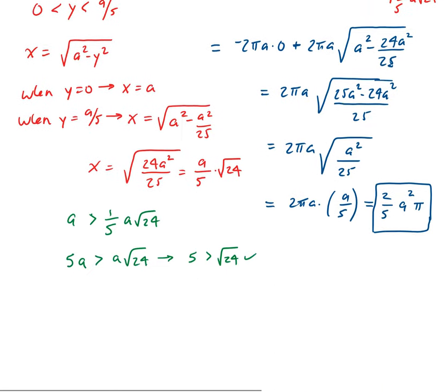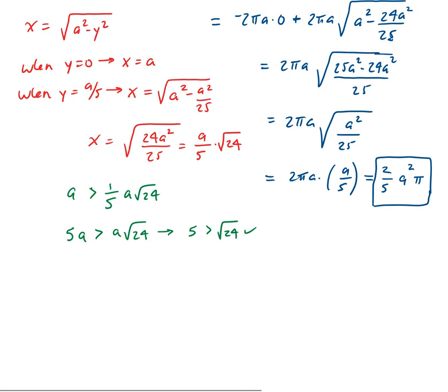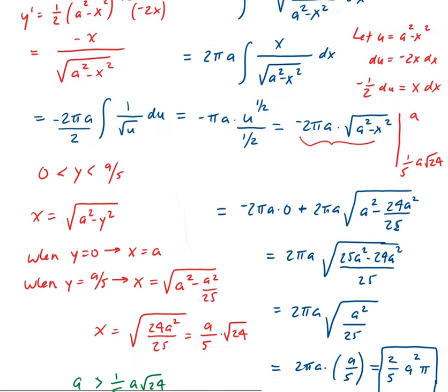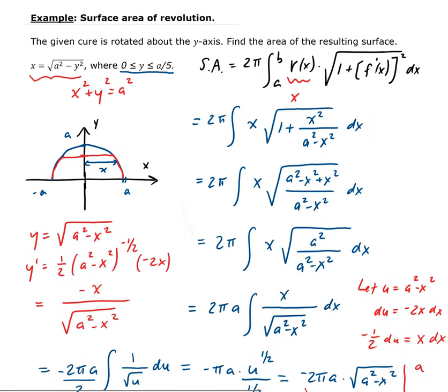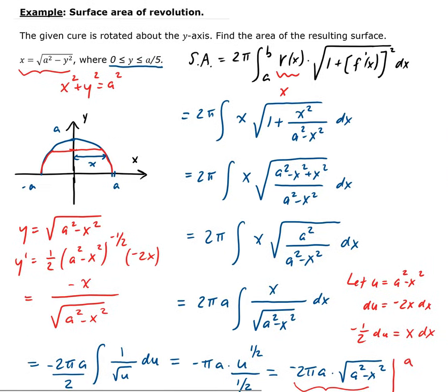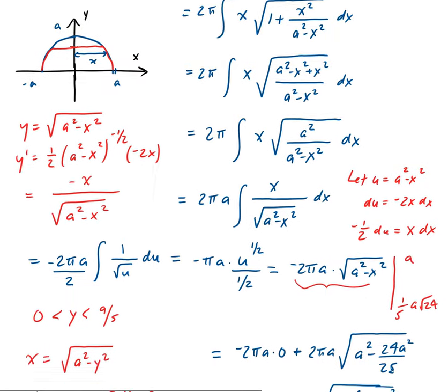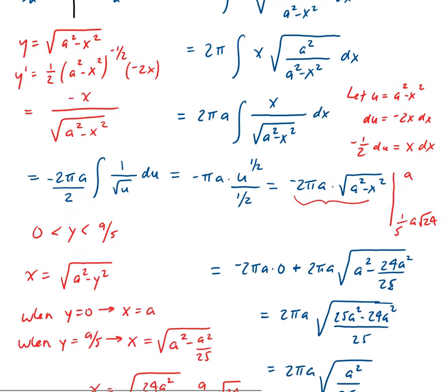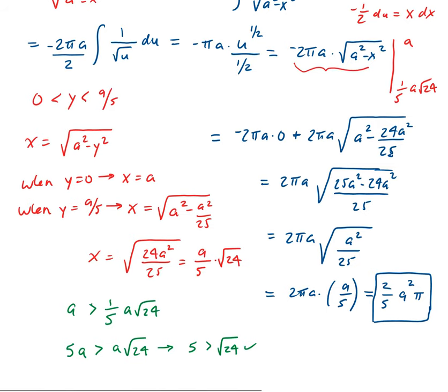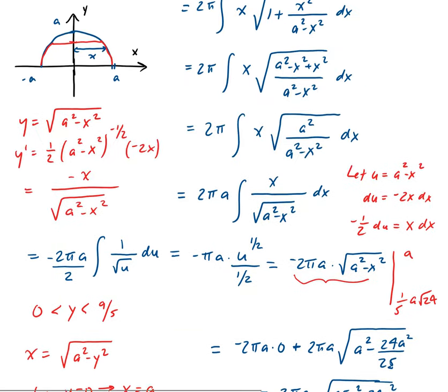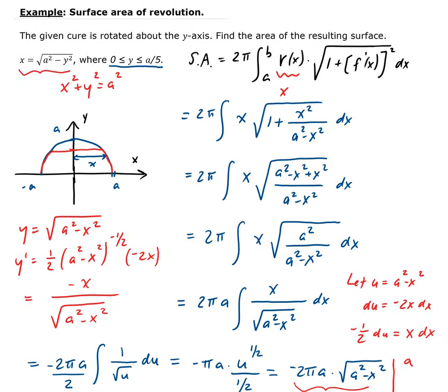That is our solution — the surface area of this region revolved around the y-axis is two-fifths πa squared. Keep in mind that the original bounds were given in y, and we had to convert them to x carefully, paying attention to the correct order.